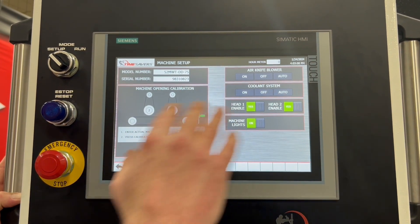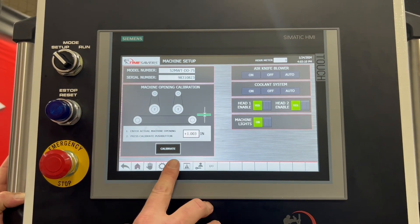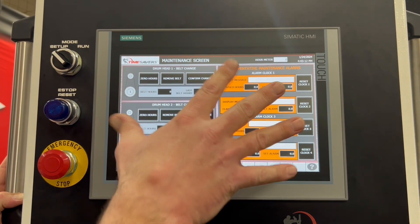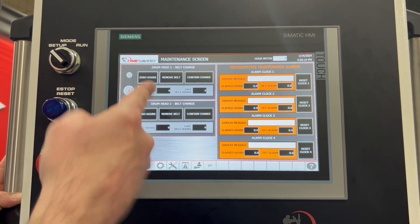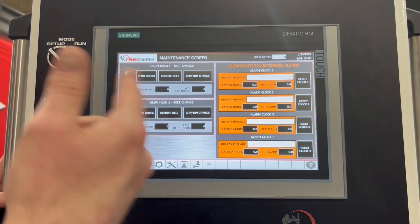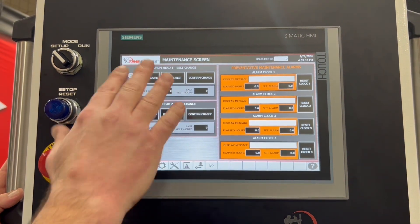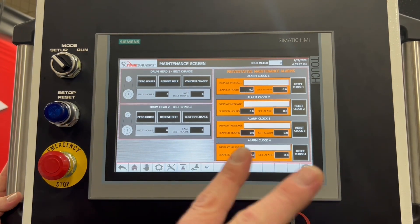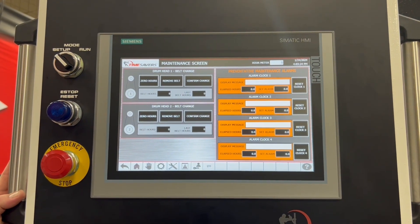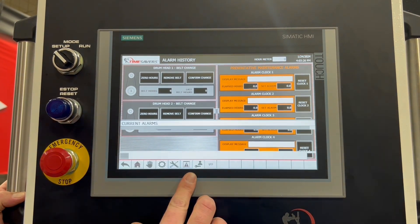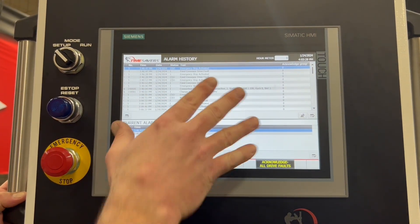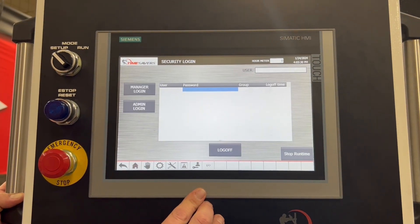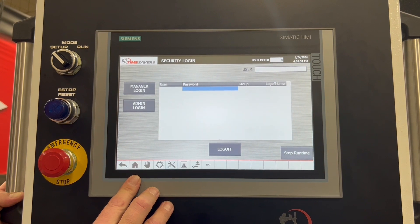We also have our setup mode here for setting up the machines, for recalibrating the bed. We also have a maintenance screen here so we can pre-determine abrasive belt wear and pre-program that, and then it will give us a message saying that the abrasive belt needs to be changed. We also have an error log here for the maintenance so we can figure out what's going on with the machine.